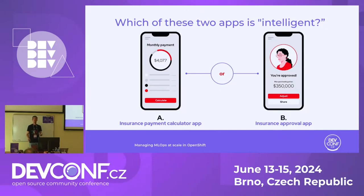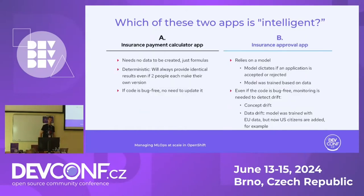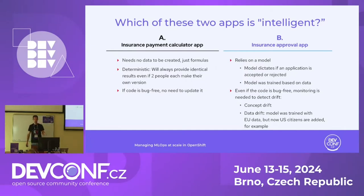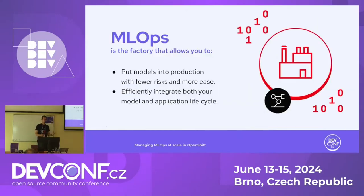The answer is B. Application A is static — it needs no data to be created, just formulas, and it's deterministic, always providing the exact same outcome. But Application B relies on a model that dictates whether an application gets approved or not. This model was trained on previous data, and even if the code is bug-free, we need to monitor the model to detect different risks. That's the main difference between a static app and an intelligent app.